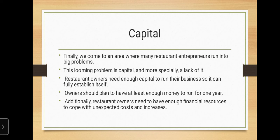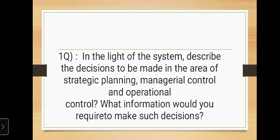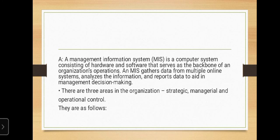Moving on to the first question: in light of the system described, what are the decisions to be made in the areas of strategic planning, managerial control, and operational control? And what information would you require to make such decisions?